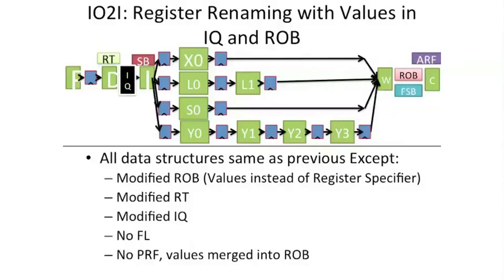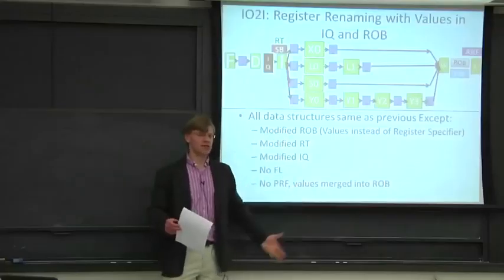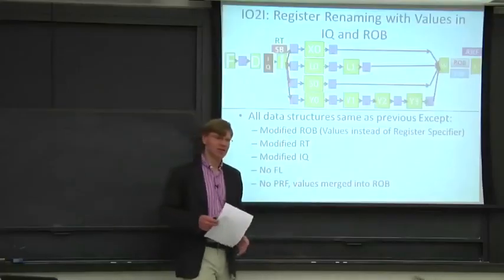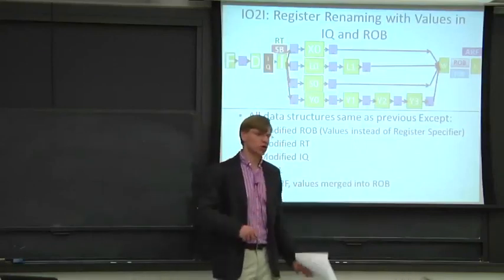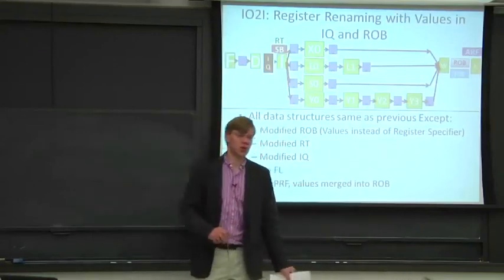Let's move on to our second scheme. If we go back to the earlier slide, we said that we can either store pointers in the instruction queue and have pointers in the reorder buffer, or we can just store the values. If you go read the original reservation station paper by Thomas Hulu, he actually stores the values in the reservation station — or what we're calling instruction queue — and the reorder buffer.